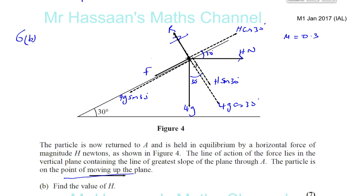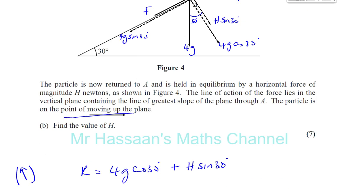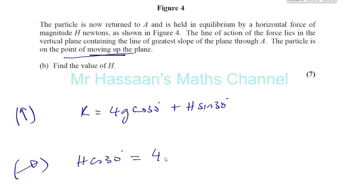So you've got H cosine 30. That's an equilibrium now, because it's not moving. So I can say equals. So you've got these two forces acting down the plane, which is 4G sine 30, 4G sine 30, plus F.